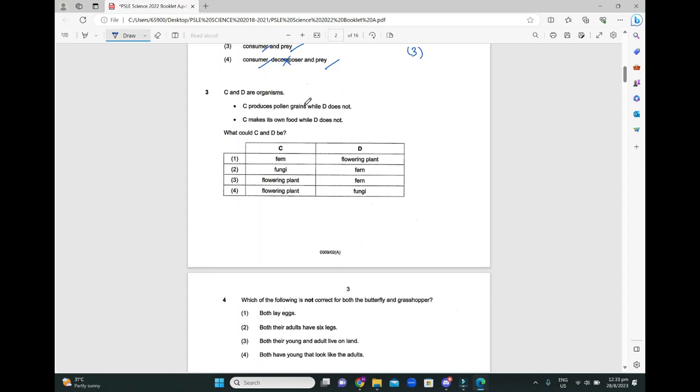Next one. C and D are organisms. C produces pollen grains while D does not. C makes its own food while D does not. As long as C makes its own food, it will be a plant. It could also be a fern, but pollen grains are only produced by flowering plants. So the answer cannot be one and two. And D does not do either of this, so D has to be a fungi. It cannot be a fern because a fern is still a non-flowering plant. If it's a non-flowering plant, it will make its own food. So the option for this question is going to be number four.